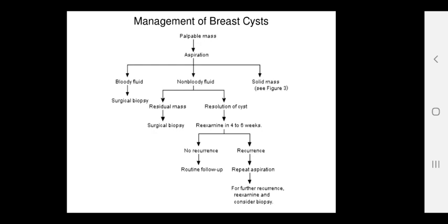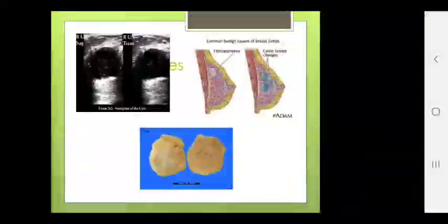If it is a solid mass, it may be fibroadenoma. Fibroadenoma is the second most common benign breast lesion. It is a benign solid tumor containing glandular as well as fibrous tissue. Usually presents as a well-defined mobile mass. Usually appears between 15 to 35 years. Cause is unknown; may be due to hormonal influence. May increase in size during pregnancy or with estrogen therapy.